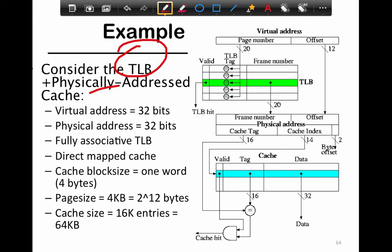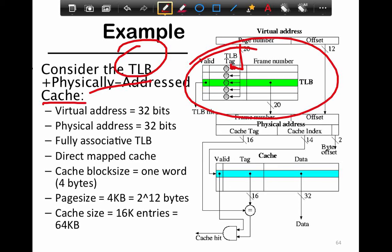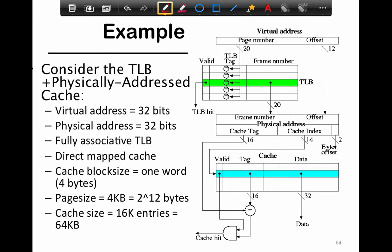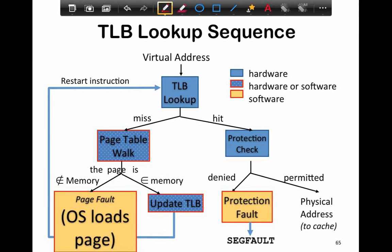The most common system employed today - for the last 10 years - is a TLB plus a physically addressed cache. What we first have is a virtual address indexing into the TLB, which gives a physical frame number. The physical frame number is coupled with the offset to get the physical address, and then you use that physical address to look up the cache which has the actual data. Note that the TLB is caching only the translations, while the data cache is caching the actual data retrieved from memory.